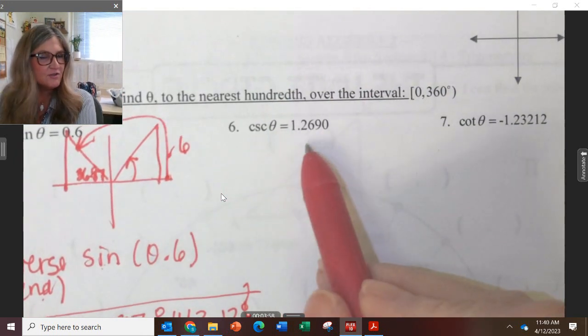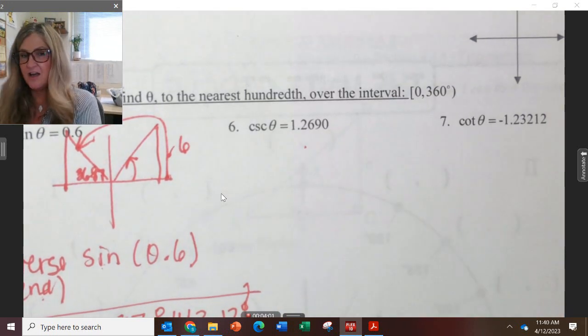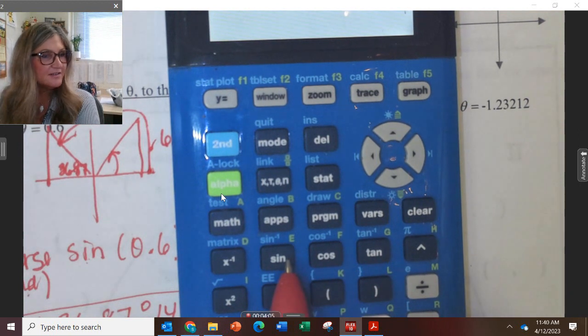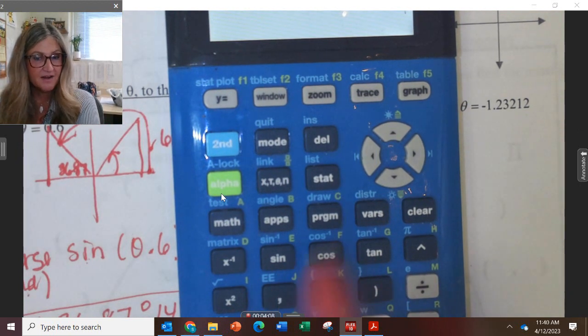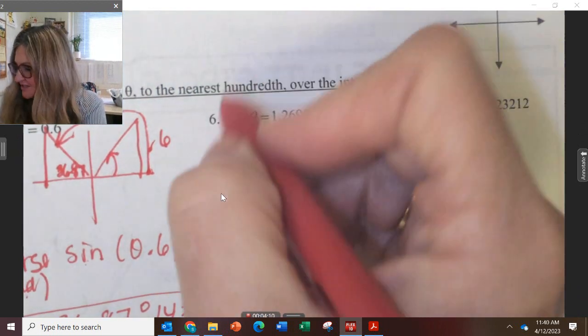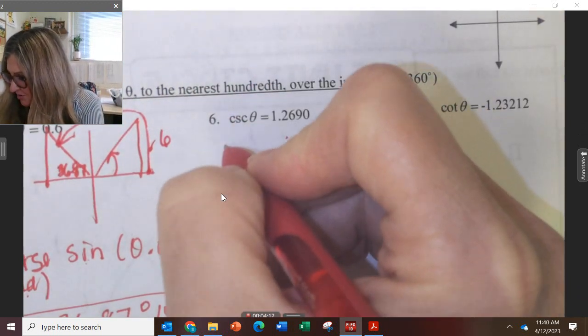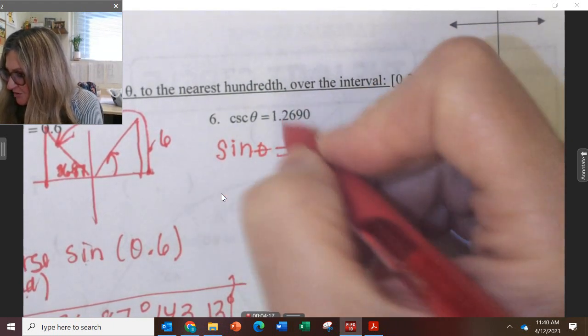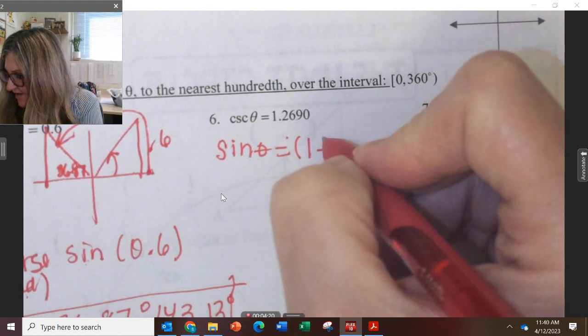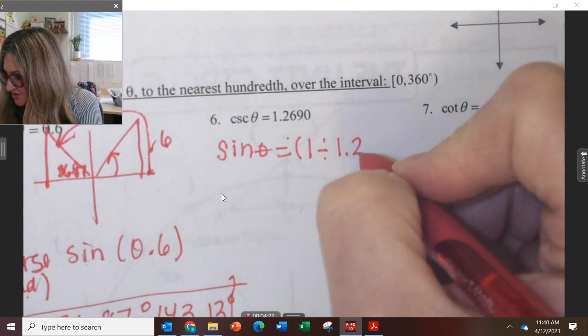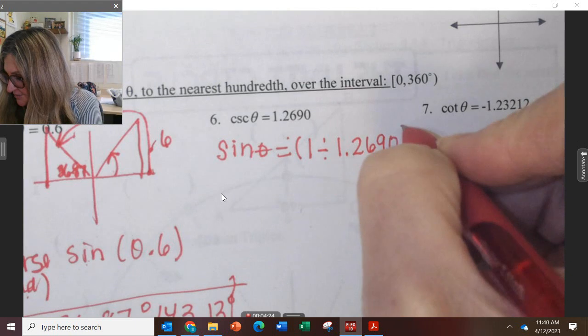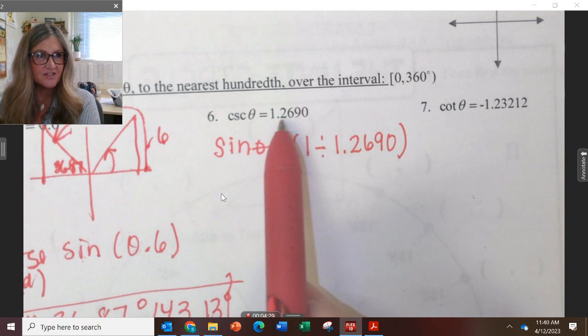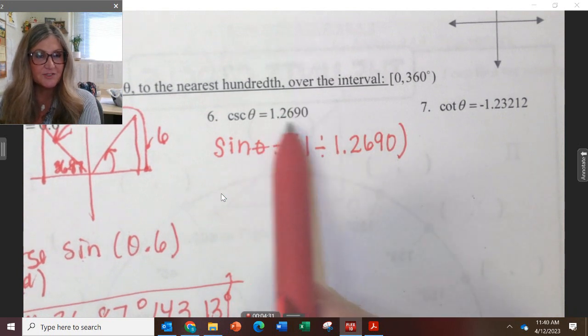What if we have a cosecant problem? Well, there is no second cosecant on the calculator. It would make it a little bit easier if there were, but there's not. So I have to change this into a sine problem. To change it into a sine problem, I have to do the reciprocal of this, so I have to do 1 divided by 1.2690.